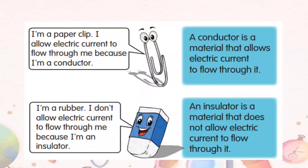So, we can conclude that a conductor is a material that allows electric current to flow through it — for example, the paper clip. An insulator is a material that does not allow electric current to flow through it — for example, rubber.